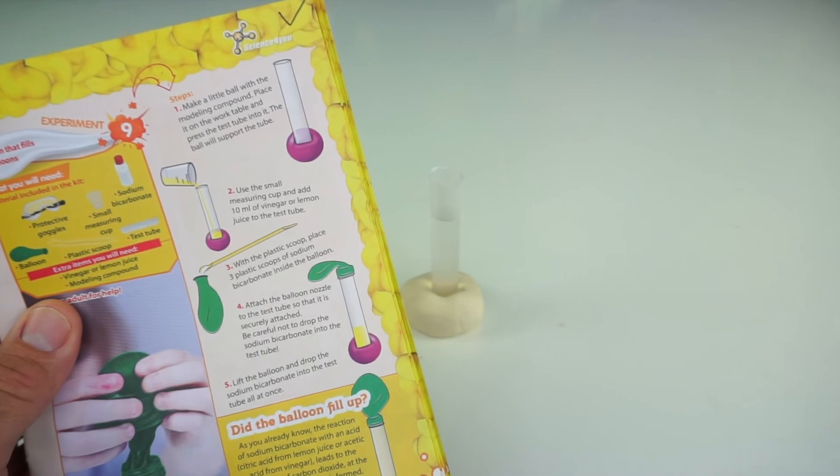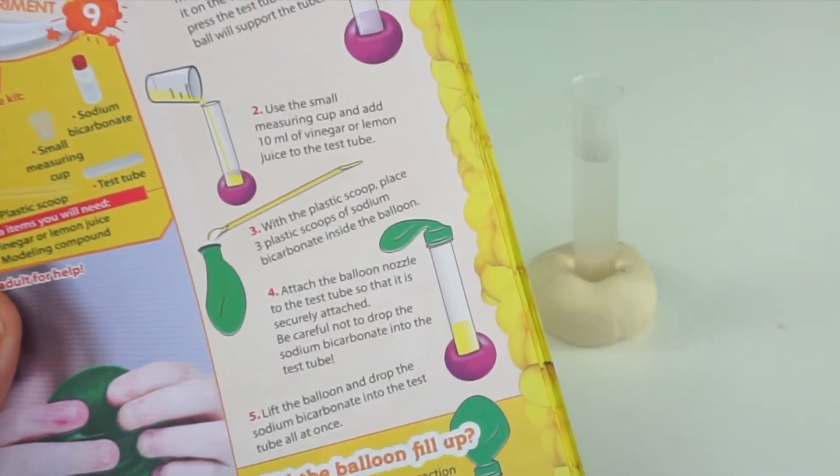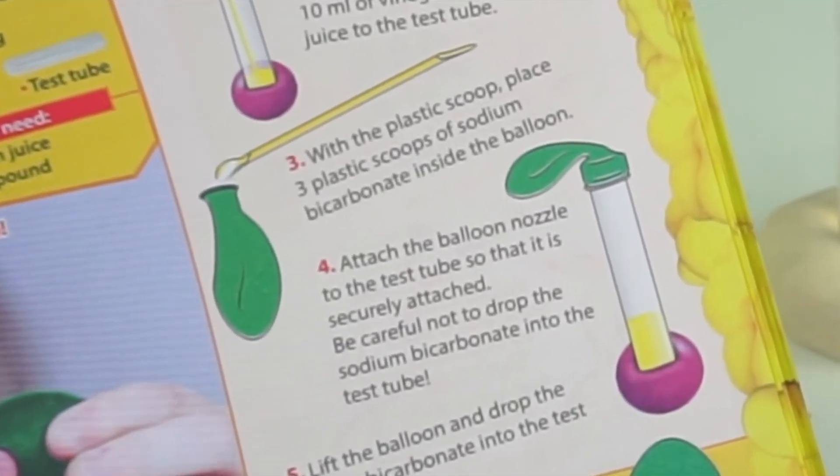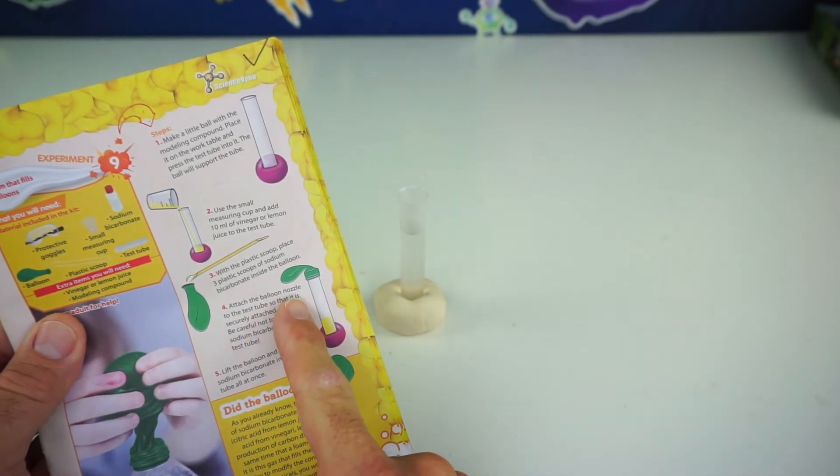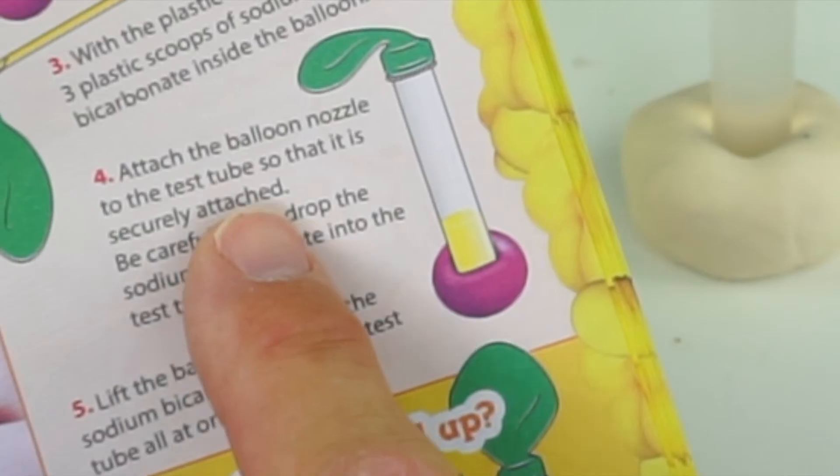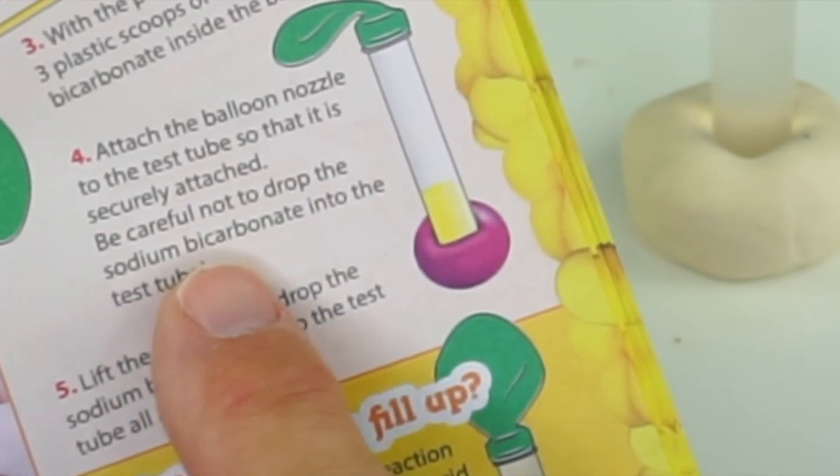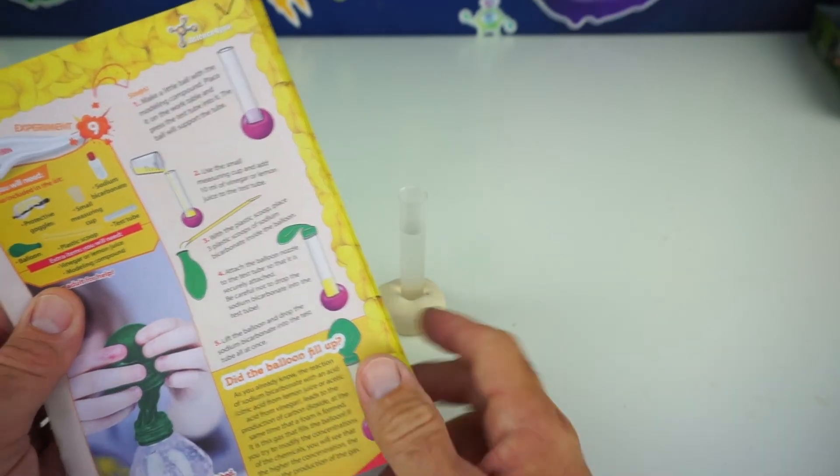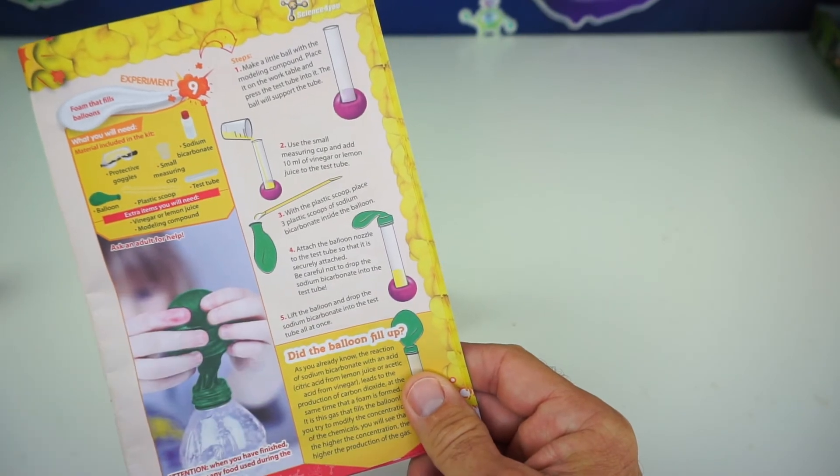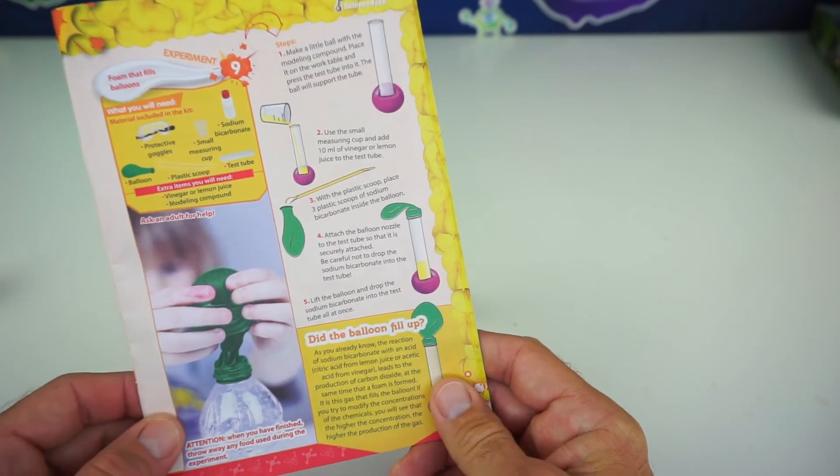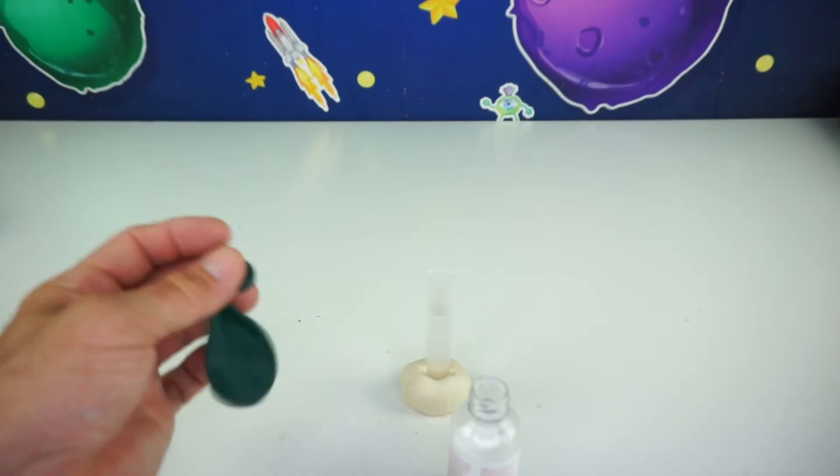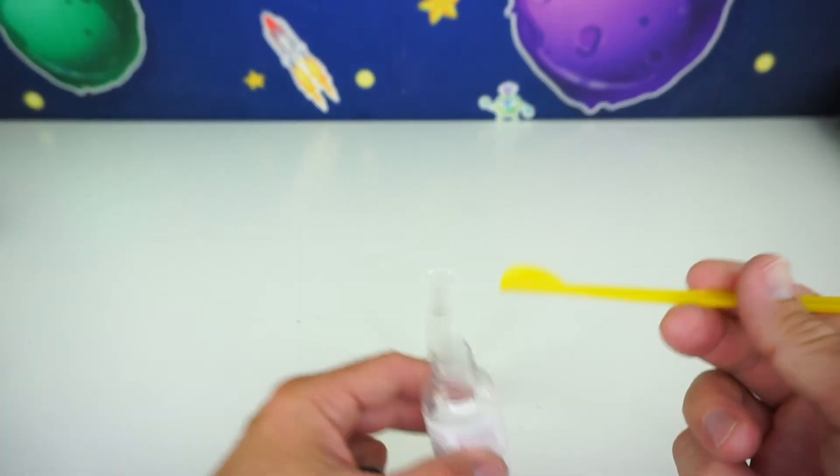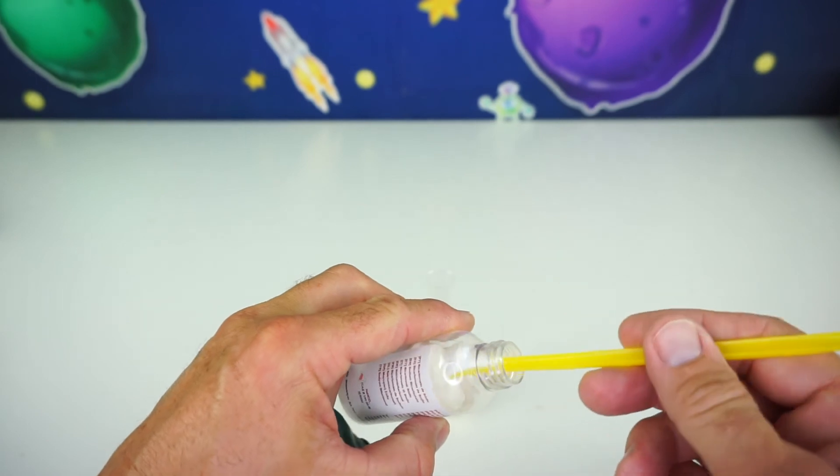Next step is with the plastic scoop, place three plastic scoops of sodium bicarbonate into the balloon and then we will attach the balloon nozzle to the end of the test tube so that it is securely attached. Be careful not to drop the sodium bicarbonate into the test tube. Number five would be to lift the balloon and drop the sodium bicarbonate and voila! The balloon should blow up by itself. Here is our balloon, our scoop and our sodium bicarbonate. Let's fill it up with three scoops.